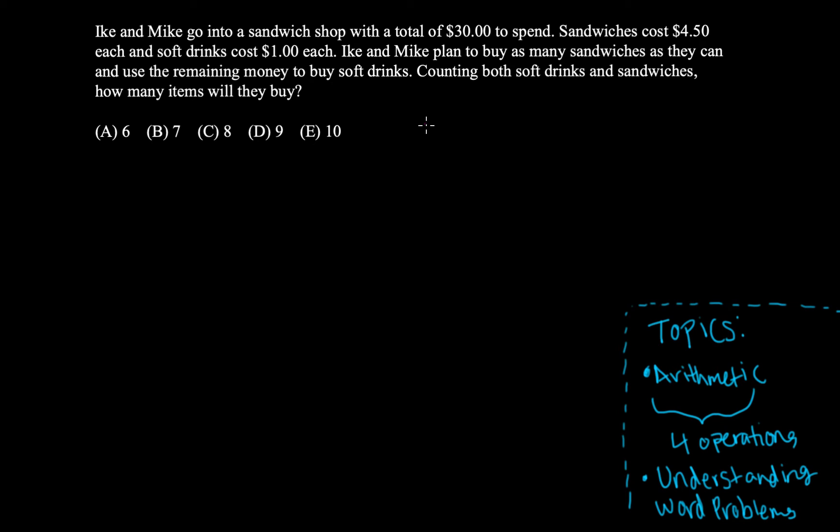Ike and Mike plan to buy as many sandwiches as they can and use their remaining money to buy soft drinks. Counting both soft drinks and sandwiches, how many items will they buy?